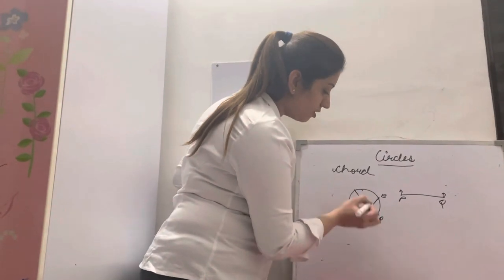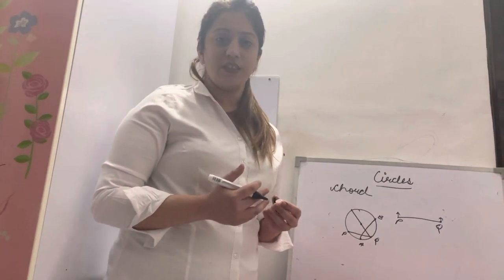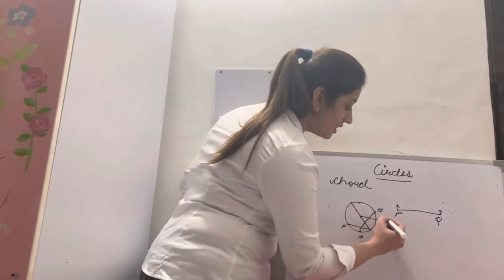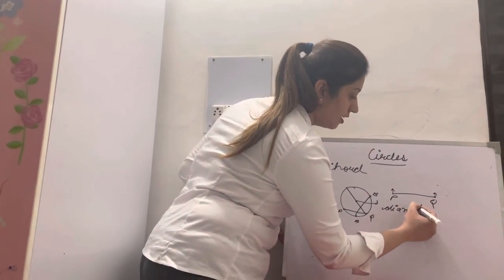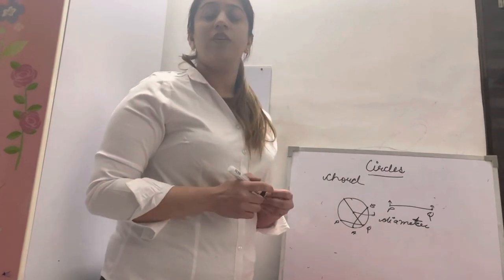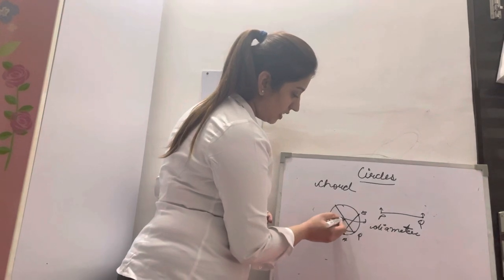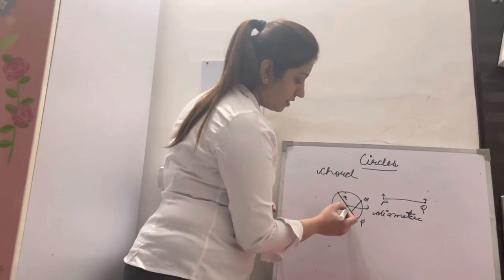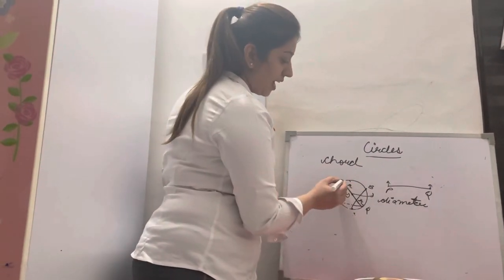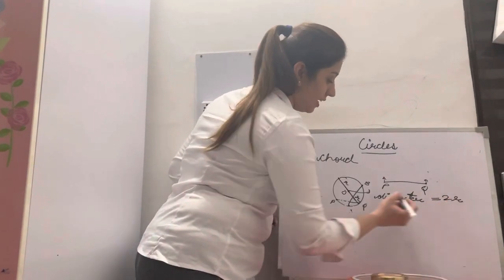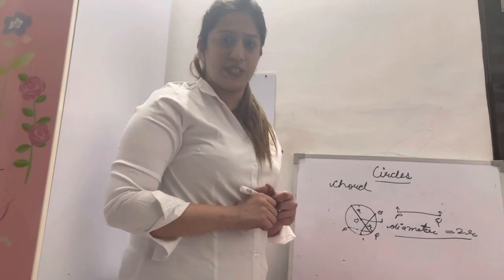The chord that passes through the center of the circle, or which bisects the center of the circle, is what we call the diameter. The diameter is also called the longest chord. The radius extends from the center to the boundary, and diameter equals twice the radius — that is, two times the radius.